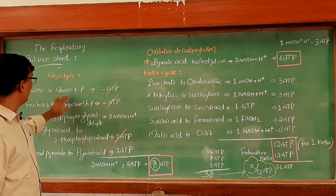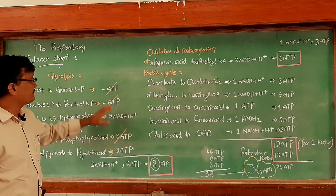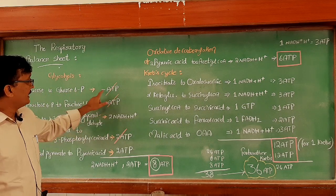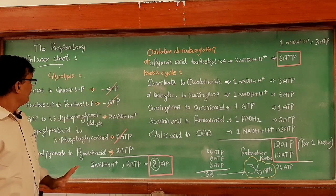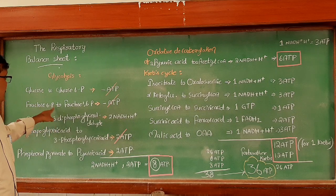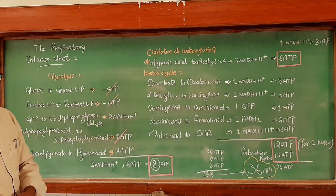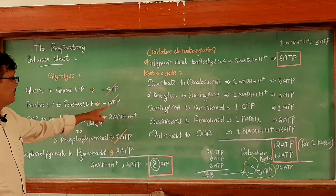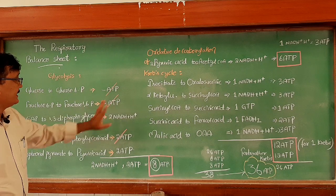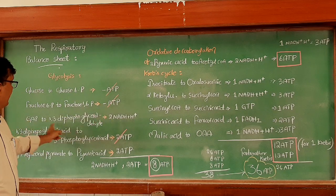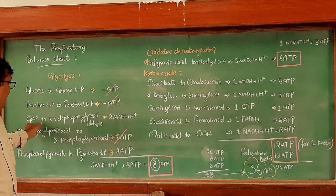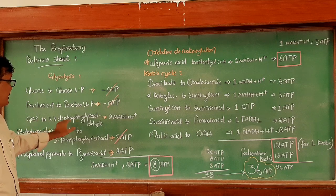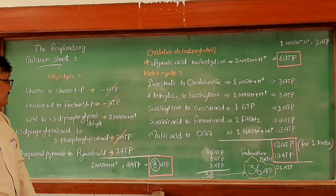In the first step of glycolysis, glucose converts to glucose 6-phosphate and ATP is utilized — so minus one ATP. And then in the third step also, fructose 6-phosphate converts to fructose 1,6-bisphosphate. Here also ATP is utilized, so minus one ATP.